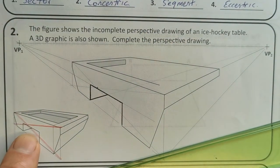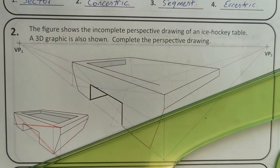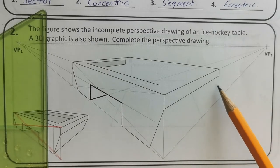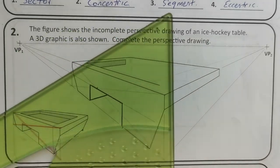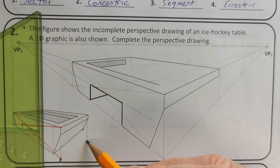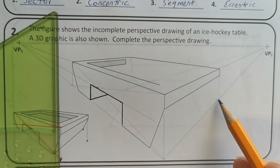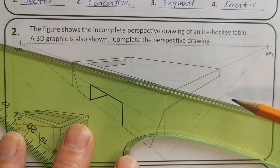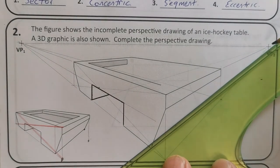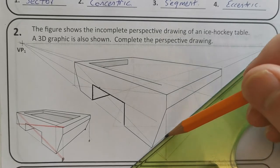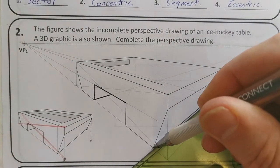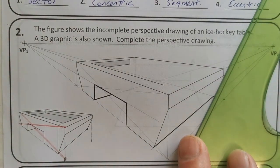That part is done. Next I need to find this corner here. I'm going to drop this down vertically and find the corresponding point on the ground. When I brought that down, it needs to be vanished back to vanishing point one on the left, and then I'll vanish this edge to vanishing point two, and that finds this corner here. This then joins up and slopes up there.